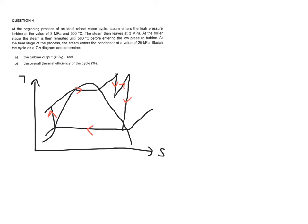So let's label your cycle first. Input to your pump will be state 1, the output will be state 2. Output from your boiler will be state 3, output from your high pressure turbine is state 4. Your input to your low pressure turbine will be 5 and the output from your low pressure turbine will be state 6.